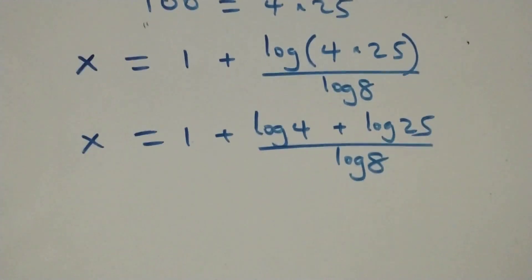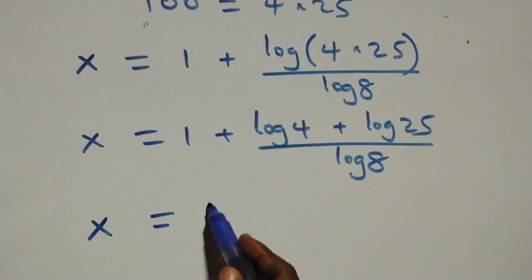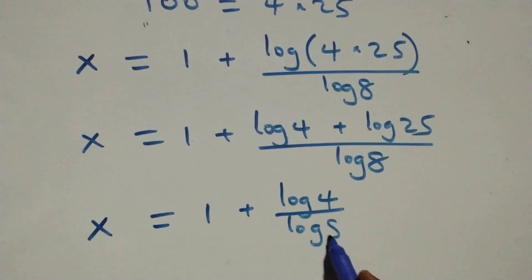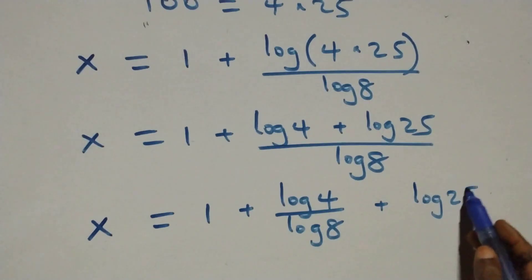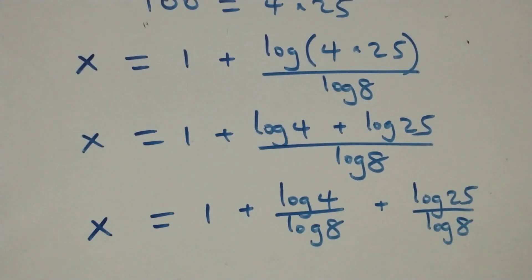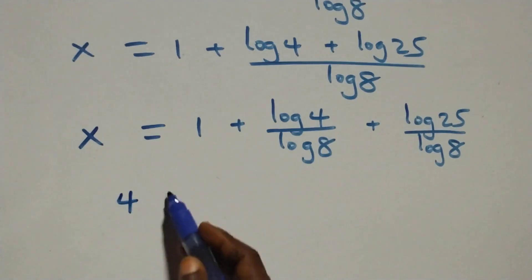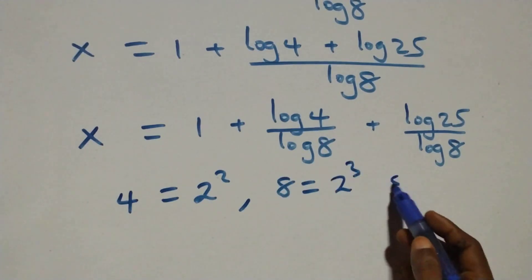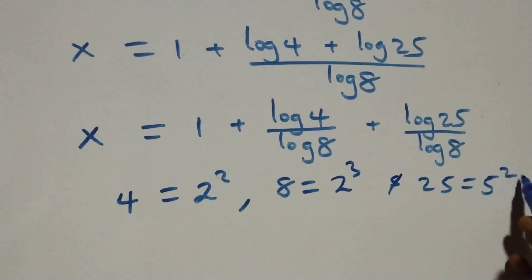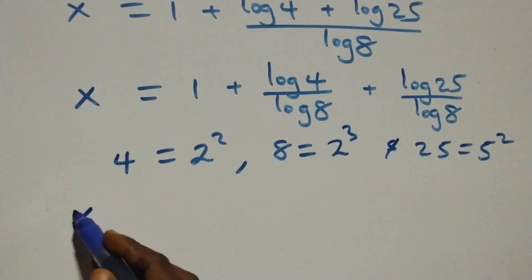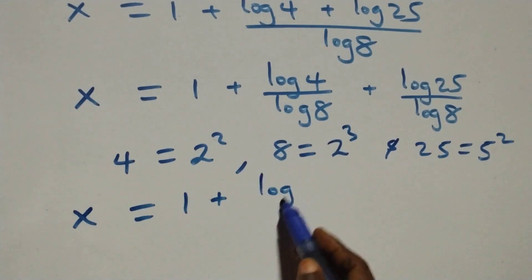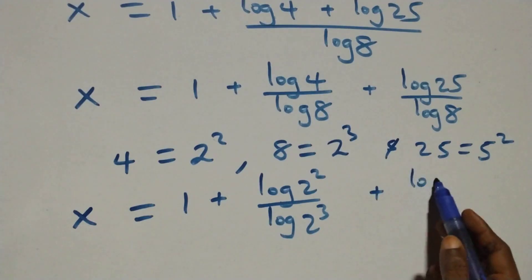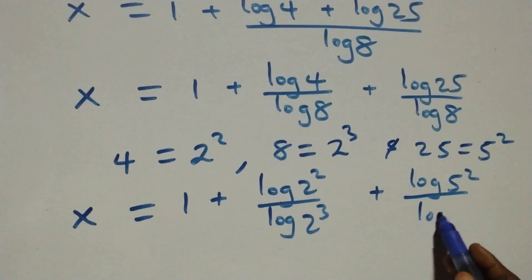We separate this into two fractions: x equals 1 plus log 4 over log 8 plus log 25 over log 8. Now 4 can be expressed as 2 squared, 8 as 2 cubed, and 25 as 5 squared. So the equation becomes x equals 1 plus log(2²) over log(2³) plus log(5²) over log(2³).